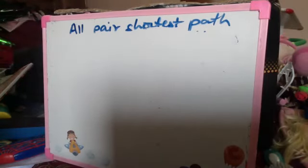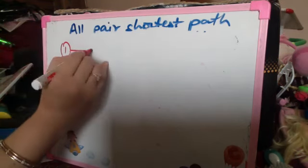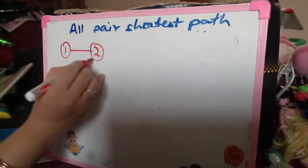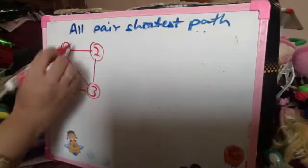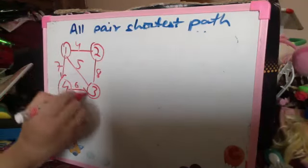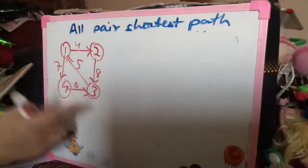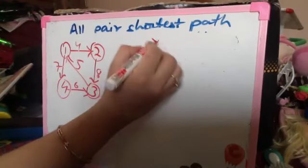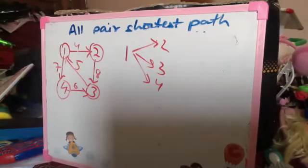Floyd-Warshall algorithm. I have some nodes in a graph which are connected with edges having some weight x, y, z. I am trying to find a path from node 1 to node 2, node 1 to node 3, node 1 to node 4, which is shortest in terms of the total weight of the edges on the path. That is called the distance of the path.